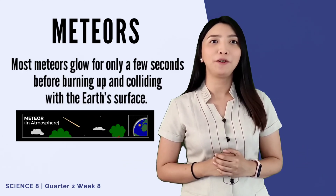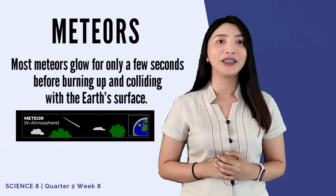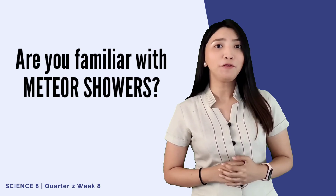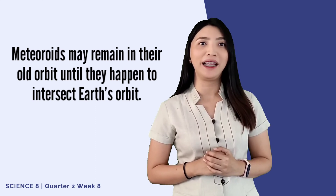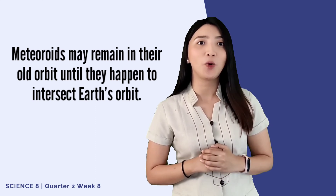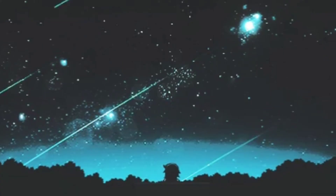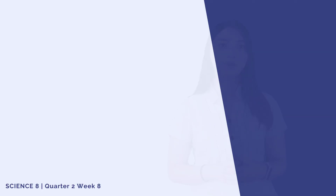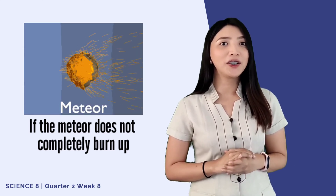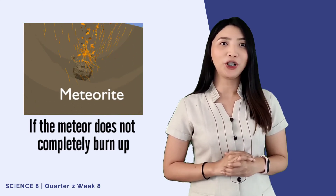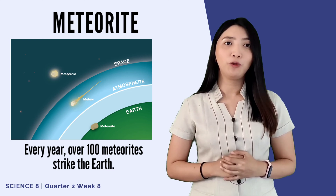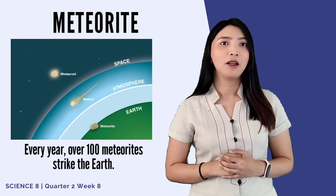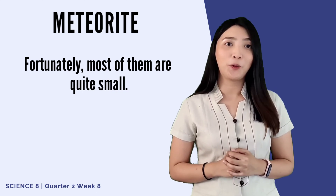Most meteors glow for only a few seconds before burning up. Are you familiar with meteor showers? Meteoroids may remain in their orbit until they happen to intersect with Earth's orbit. When this occurs, we are treated to a spectacular phenomenon in the night sky known as a meteor shower. Finally, if the meteor does not completely burn up, the remaining portion that reaches the Earth is referred to as a meteorite. Every year, over 100 meteorites strike the Earth, but fortunately most of them are quite small.